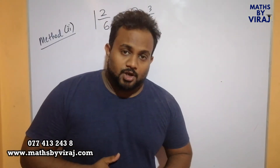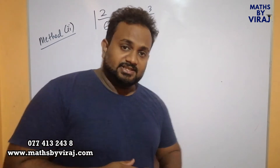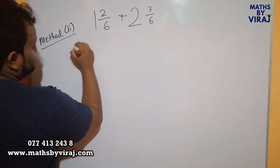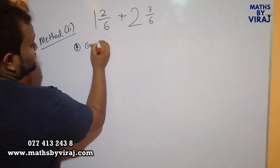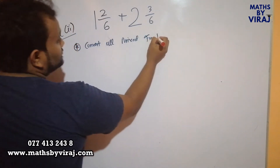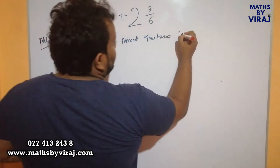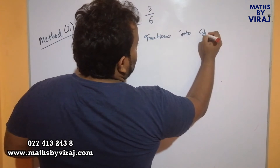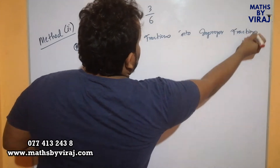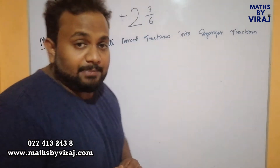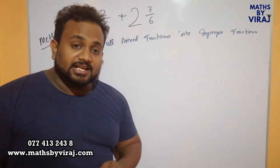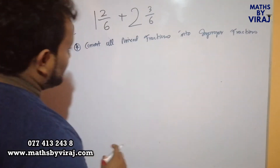Therefore 3 plus 5 over 6, and the final answer is 3 and 5 over 6. Method 2 for solving mixed fractions is as follows: first you convert all mixed fractions into improper fractions. In case you missed my previous lesson, you can go to the link shown here and see how mixed fractions are converted into improper fractions.